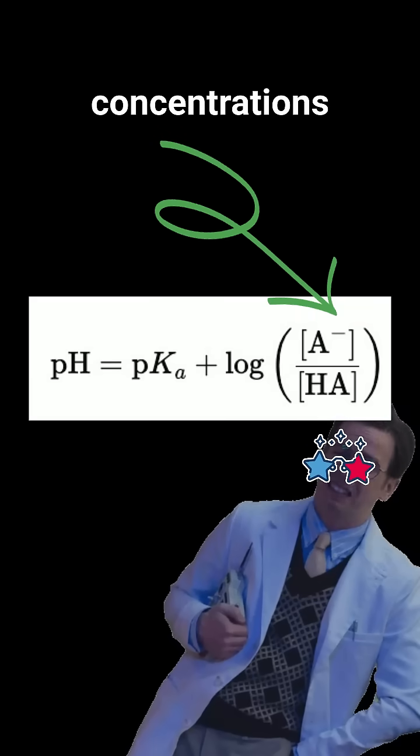We use concentration ratios to figure out what pH the buffer will hold, and we use moles to understand how much added acid or base the buffer can handle while keeping that pH stable. But remember, whenever you're using the Henderson-Hasselbalch equation, you must always work in concentrations, not moles.